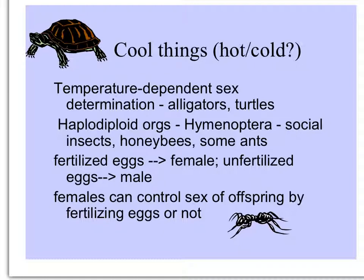In haplodiploid organisms, where fertilized eggs become diploid females and unfertilized eggs become males, sex ratios can be controlled by the queen in response to the environment. Females control the sex of their offspring by allowing the eggs to be fertilized or not. This is found in ants and honeybees, which are social insects.